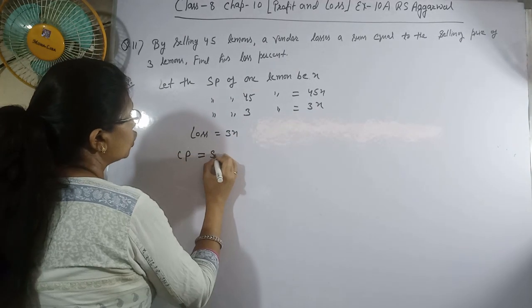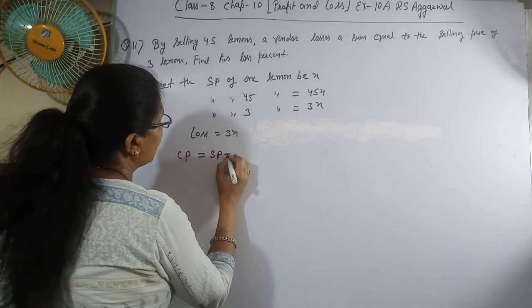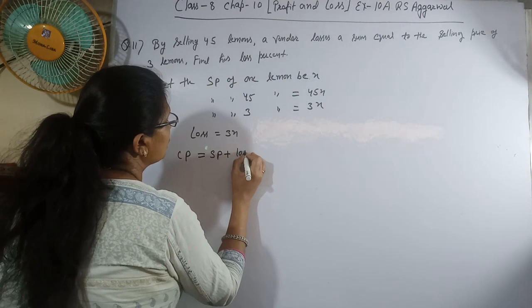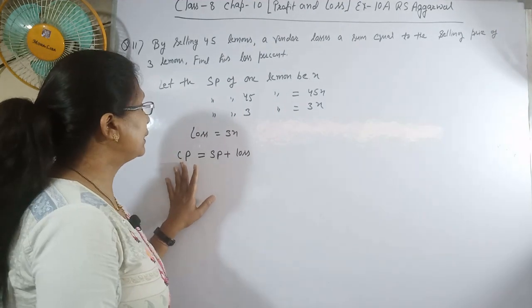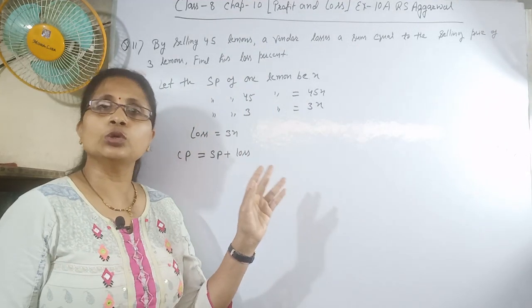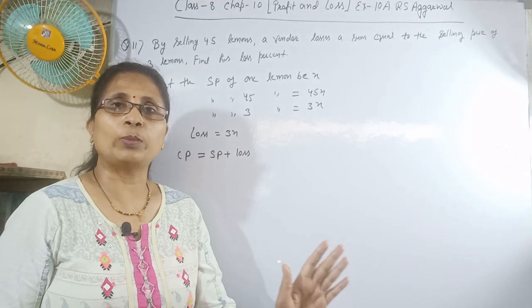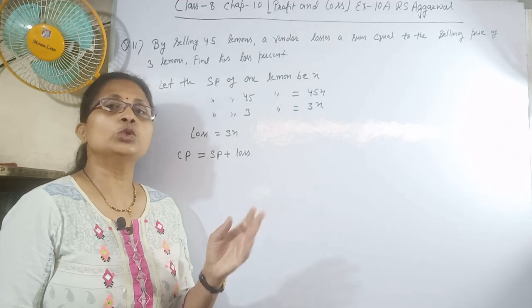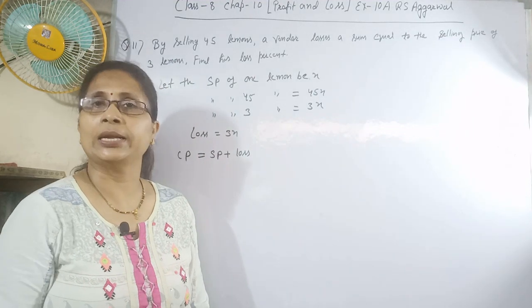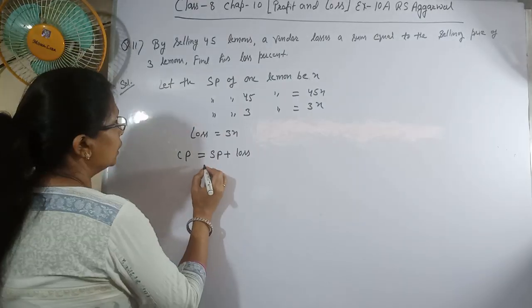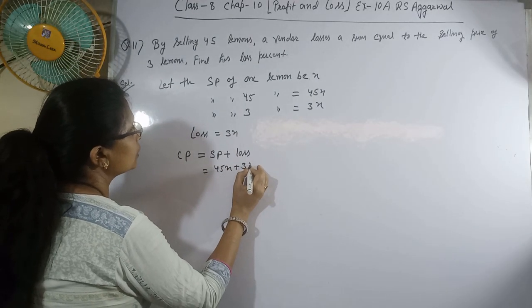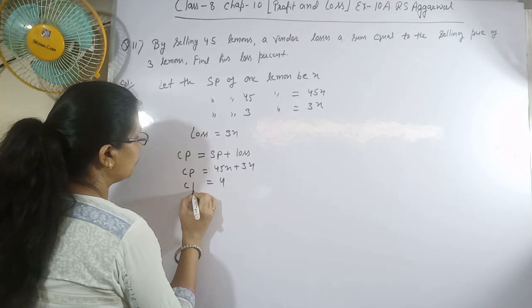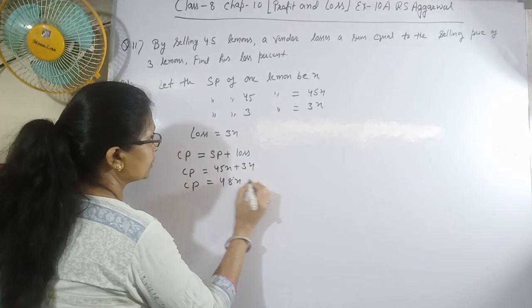CP equals SP plus loss. When there's loss, we add it; when there's gain, we subtract it from SP. Therefore, SP is 45x plus loss of 3x, giving us CP of 48x.